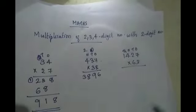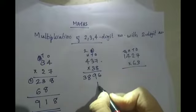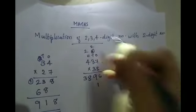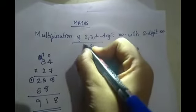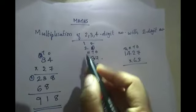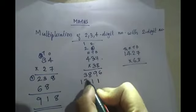And 3 into 7 is 21, 1 you will write here and 2 is carried over. 3 into 3 is 9, 9 plus 2 is 11, 1 is carried over again. 3 into 4 is 12, 12 plus 1 is 13.